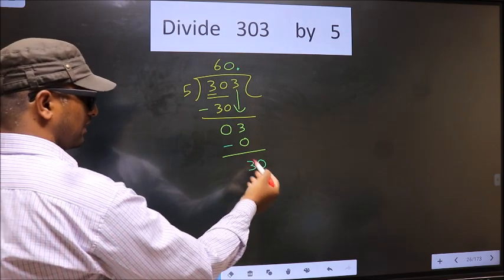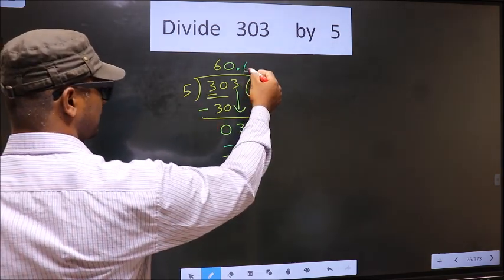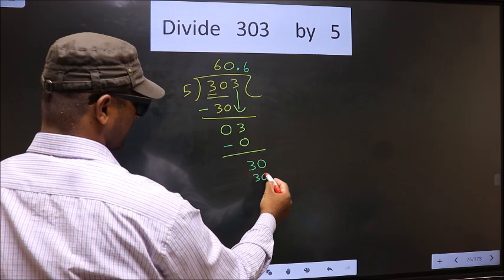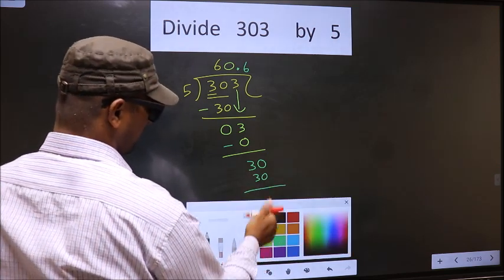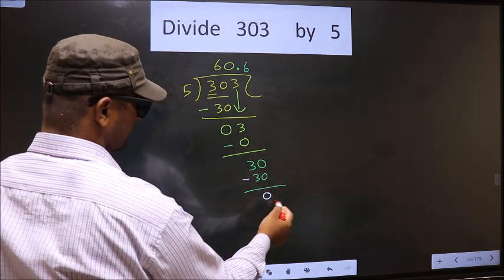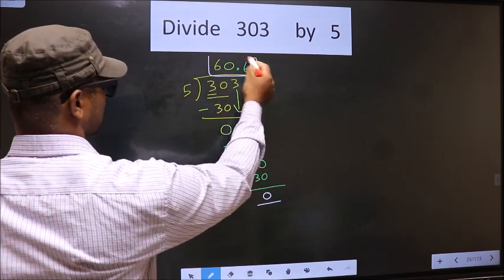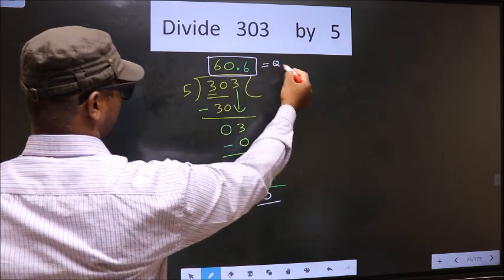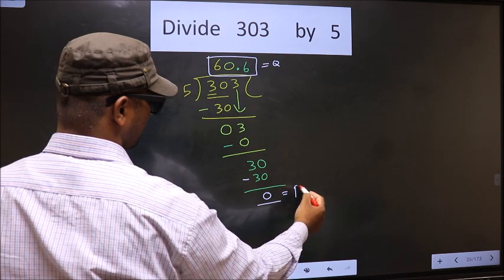Here we have 30. When do we get 30 in 5 table? 5, 6, 30. Now you subtract, you get 0. So this is our quotient and this is our remainder.